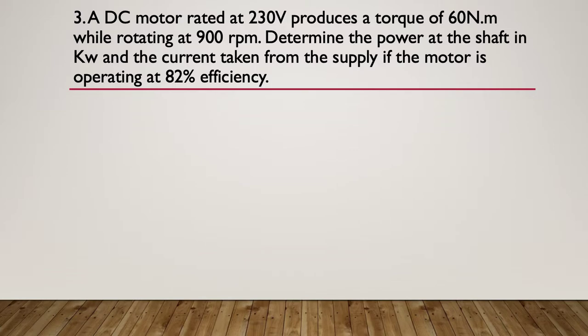So pause here while you do the calcs. Here's some hints. Power out equals Nt divided by 9.55. Input power is equal to the output power divided by the efficiency percent. And I equals P divided by V. So again, pause here if you didn't know the formulas and use the information there to do the question.